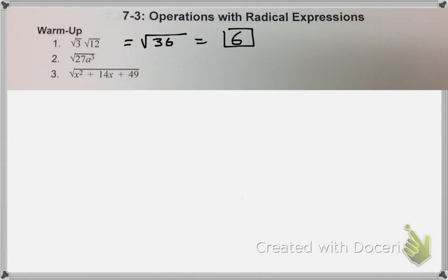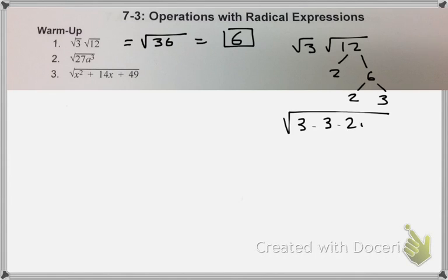So that might be a little bit easier, but if you would rather factor it out first, you get 3 times 3 times 2 times 2, here's a group of 2, here's a group of 2, and you still get 6. So either way you do it, you should get the same answer.